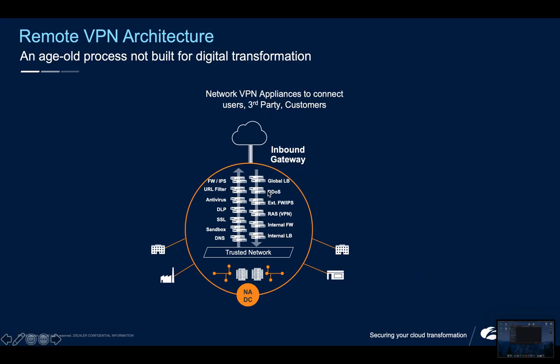Over here on the diagram, this is a typical hub-and-spoke network. It could be MPLS, it could be SD-WAN, but it's characterized by generally having one or two centralized internet breakouts at which point you find the organizational security. On the left we have a range of security appliances that protect users from going to the internet, and on the right we have a range of technology that helps organizations securely connect remote users into their network to access applications.